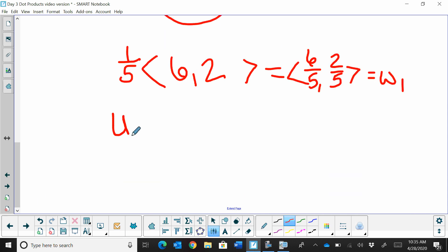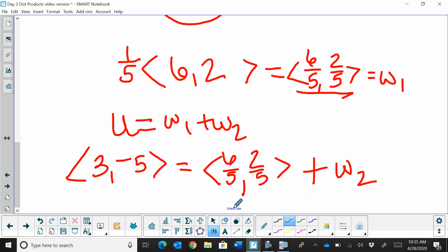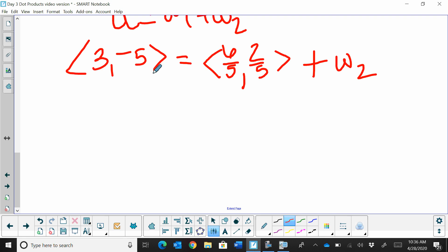We figured out w sub 1. So u is equal to the composition of w sub 1 plus w sub 2. So we know what u is. u is the original vector of (3, -5). We now know w sub 1. We figured that out. That was the part of v of 6/5, 2/5. And we can now find the second vector that we need, the decomposition, the second one. How do we do that? Well, this is easy. The big vector is equal to the two small vectors added together. So can't we just take u and subtract w sub 1 to find w sub 2? So we're just going to subtract these two.